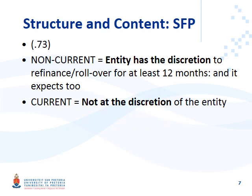Summary for paragraph 73: the key question is does the entity have the discretion? If so, do they expect to roll over the payment beyond 12 months after the reporting period? Classify as non-current when the entity has the discretion to refinance or roll over for at least 12 months after the reporting period and they expect to do so. Classify as current if the entity has no discretion to roll over the payment.